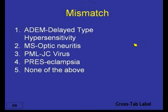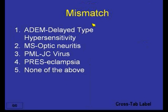Which of these is a mismatch? ADEM with delayed type hypersensitivity, multiple sclerosis with optic neuritis, PML with JC virus, and PRES with eclampsia — or none of the above? Which of these is a mismatch?